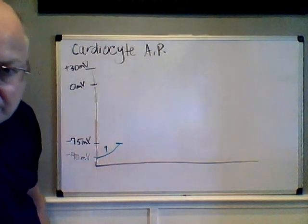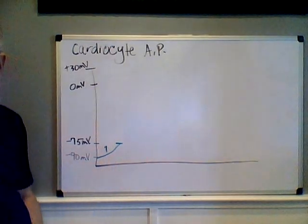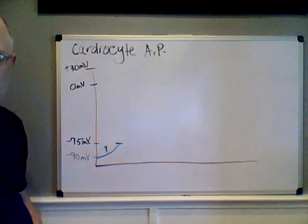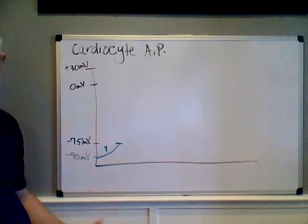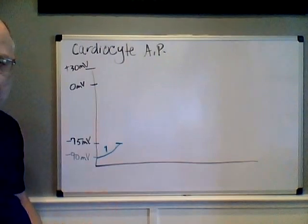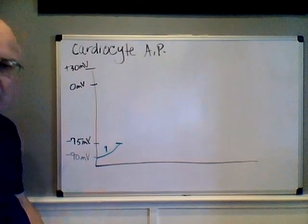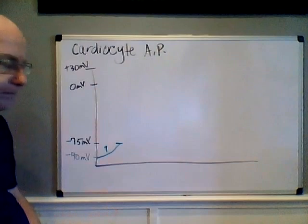For those of you in my class, the information is on page 51 of my note set. These are the four steps of the cardiocyte action potential. There'll also be a worksheet to download. For those without access to my note set, sorry.